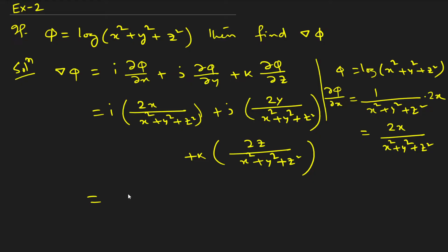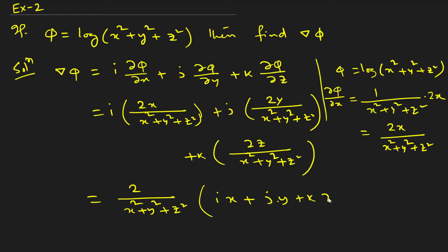Taking 2/(x² + y² + z²) as a common factor, we are left with x i-cap + y j-cap + z k-cap. We can write x² + y² + z² as r², and x i-cap + y j-cap + z k-cap as r̄. So the final answer is 2r̄/r².